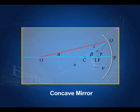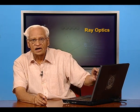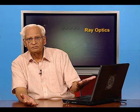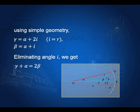All these angles are small because all rays are assumed to be paraxial. Using simple trigonometry, I can write the relation between gamma, alpha, and beta using the angle of incidence and angle of reflection. The angle of incidence equals the angle of reflection by the laws of reflection. In triangle OIQ, gamma is the exterior angle, so gamma equals 2i plus alpha. Beta is also an exterior angle, so beta equals i plus alpha. Eliminating i between these two gives: gamma plus alpha equals 2 beta.